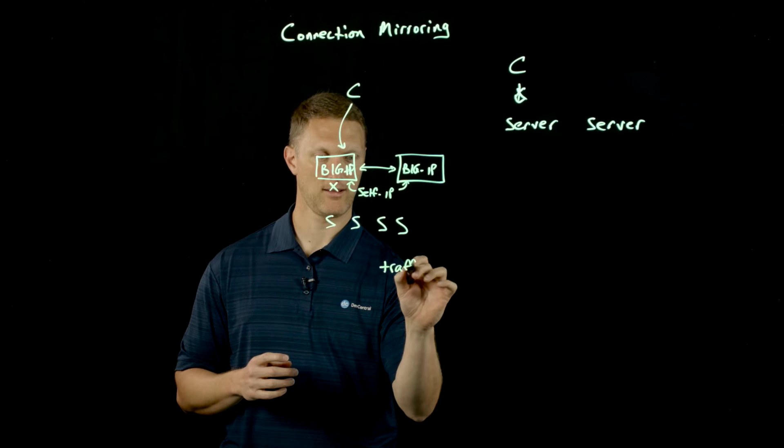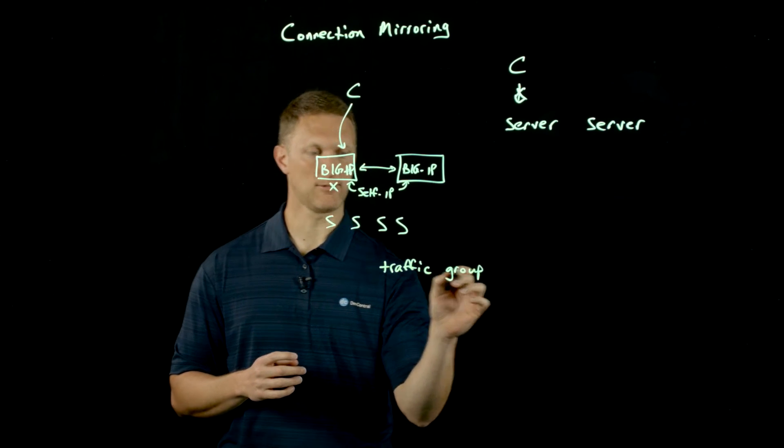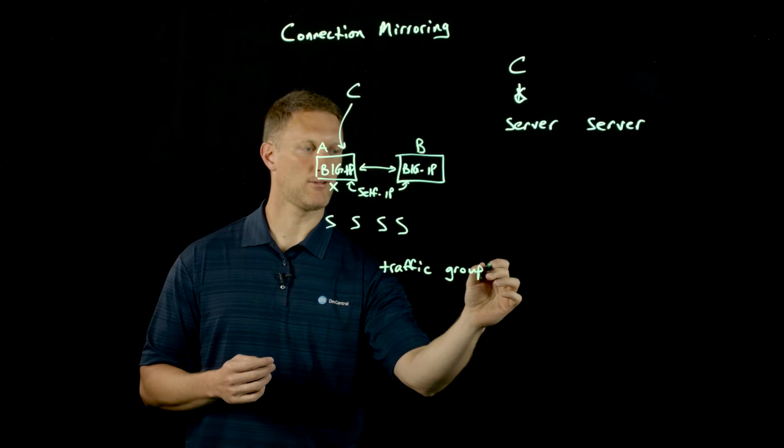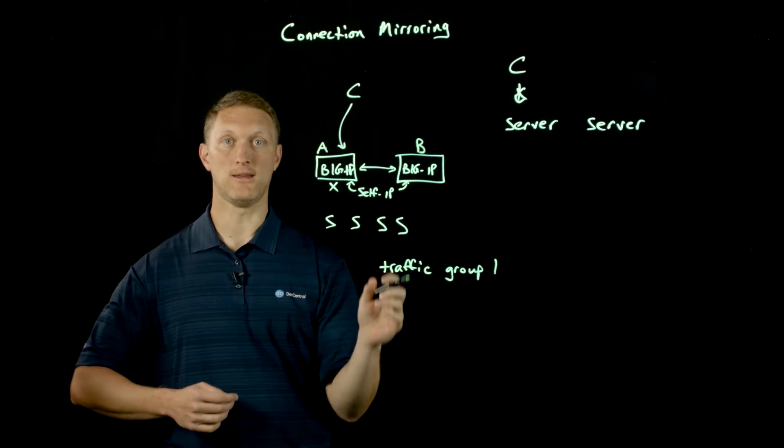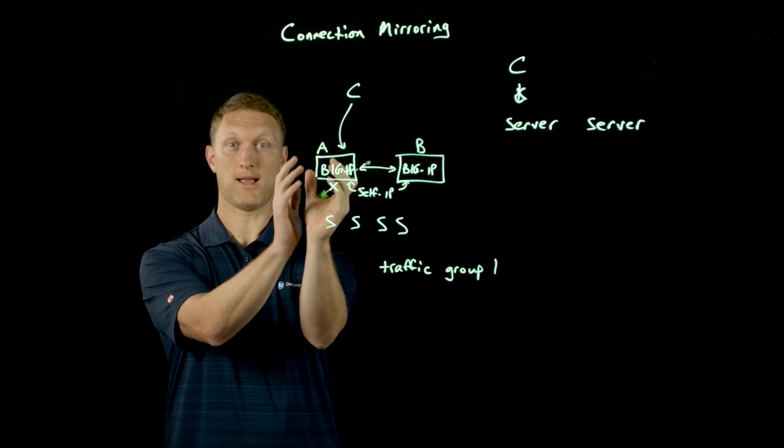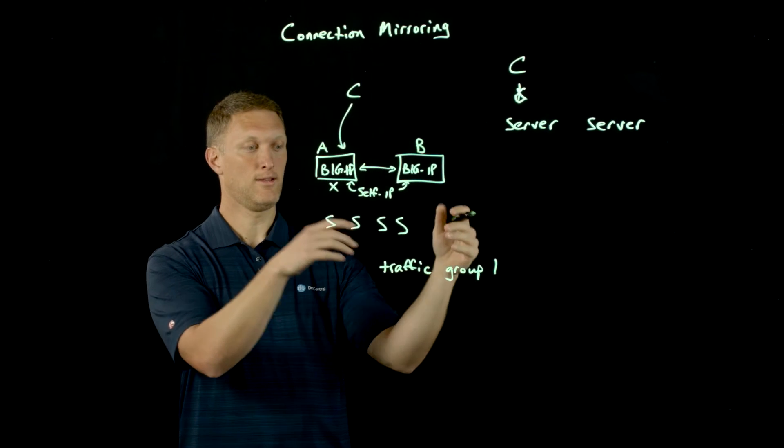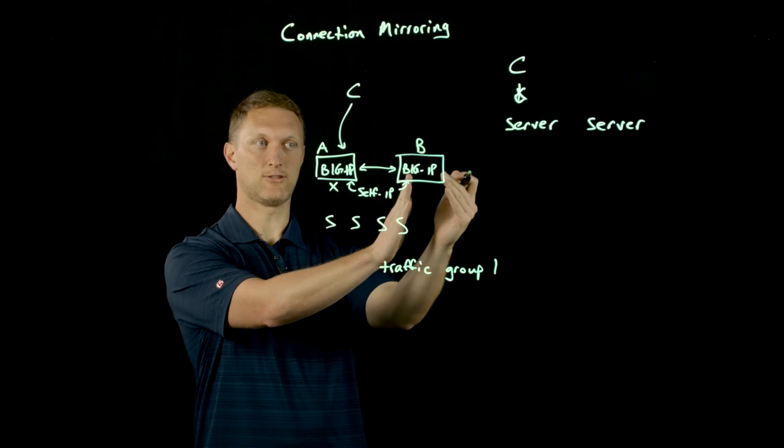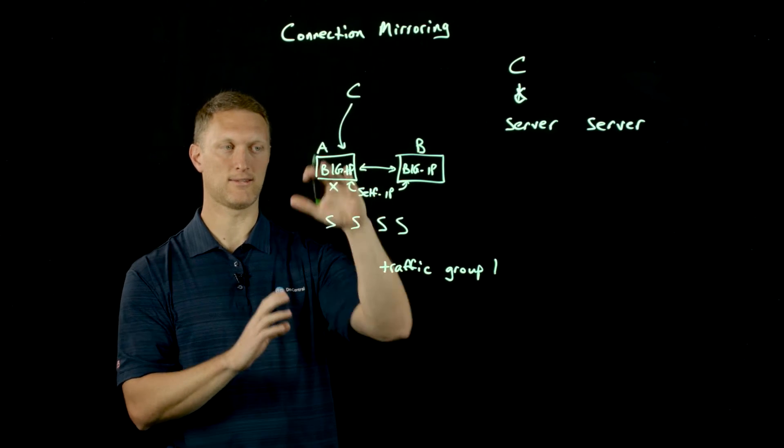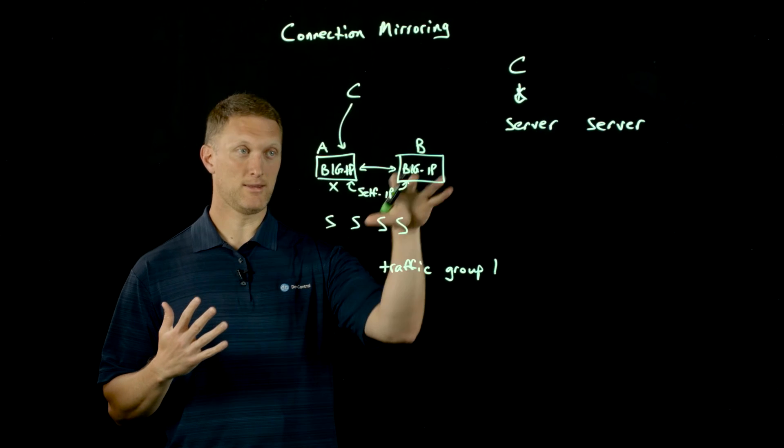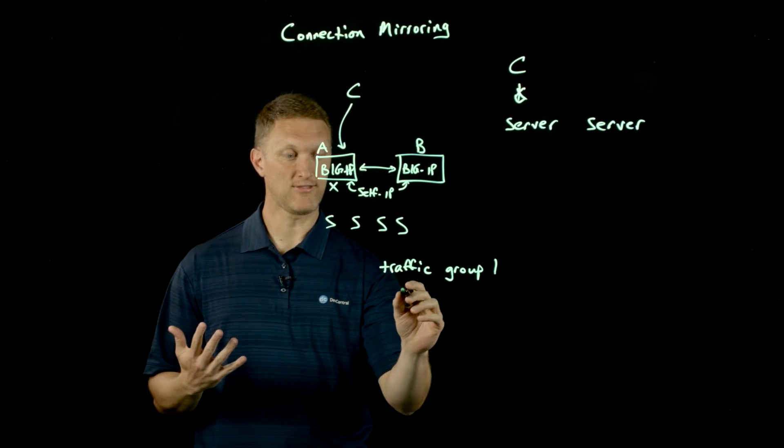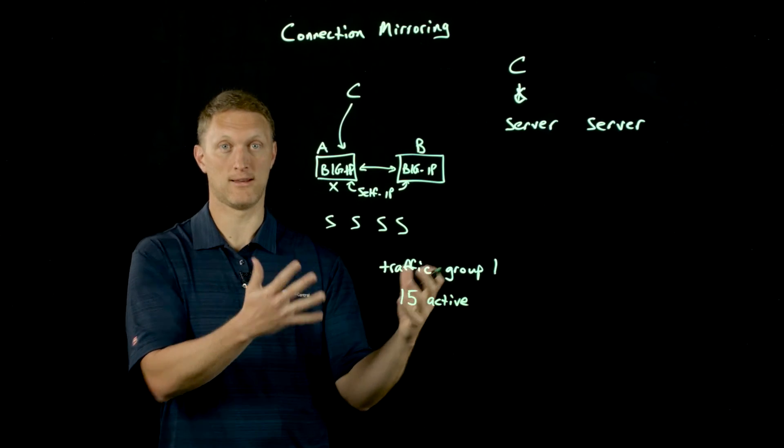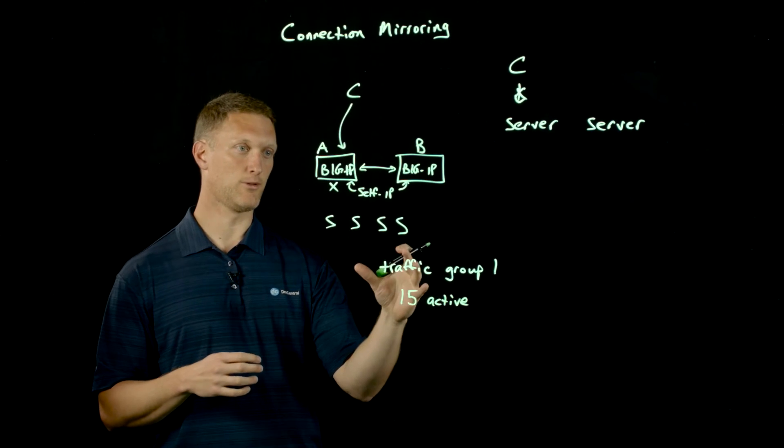Also, the connection mirroring happens at the traffic group level. Let's say for example this is BIG-IP A and this is BIG-IP B, and there's traffic group one on each of these BIG-IPs. If BIG-IP A goes down, traffic group one on BIG-IP A used to handle all the connections here, then there would need to be a traffic group one also established on BIG-IP B. As soon as this one goes down, everything gets shifted over to BIG-IP B traffic group one. This is handled at the traffic group level. In fact, the way that the BIG-IPs are set up with connection mirroring, you can handle up to 15 active traffic group connection mirroring sessions all simultaneously.